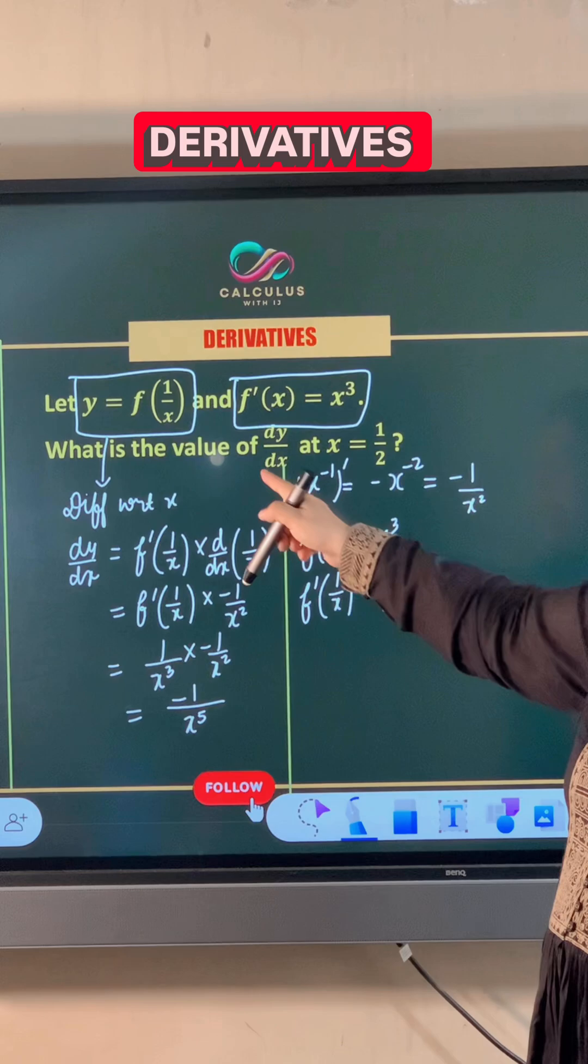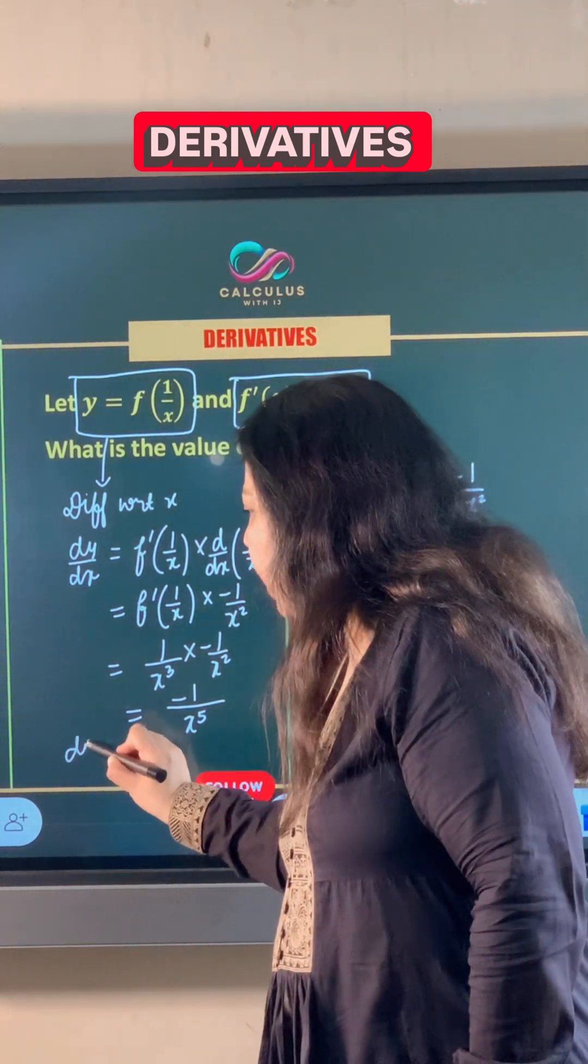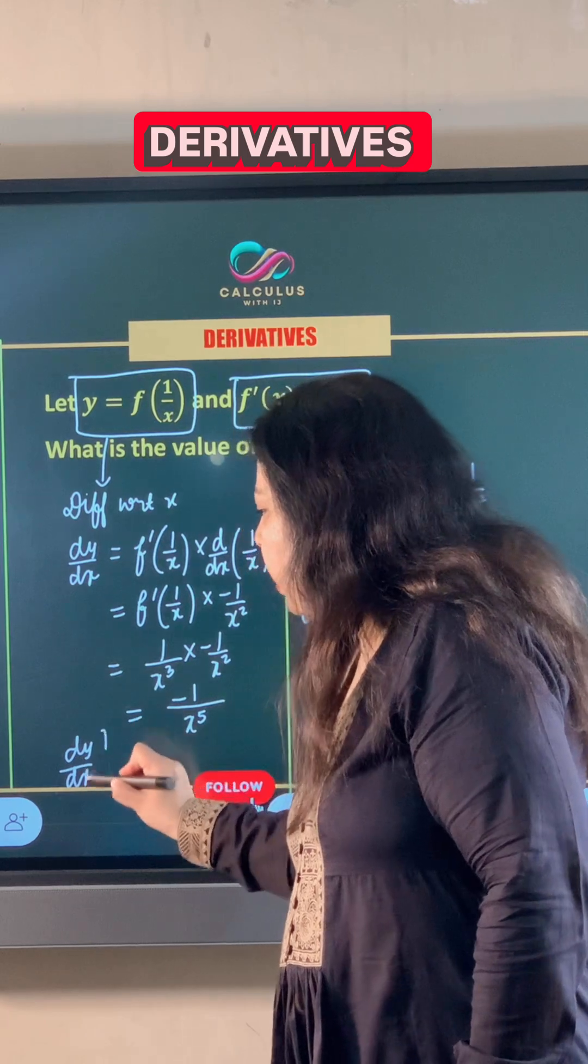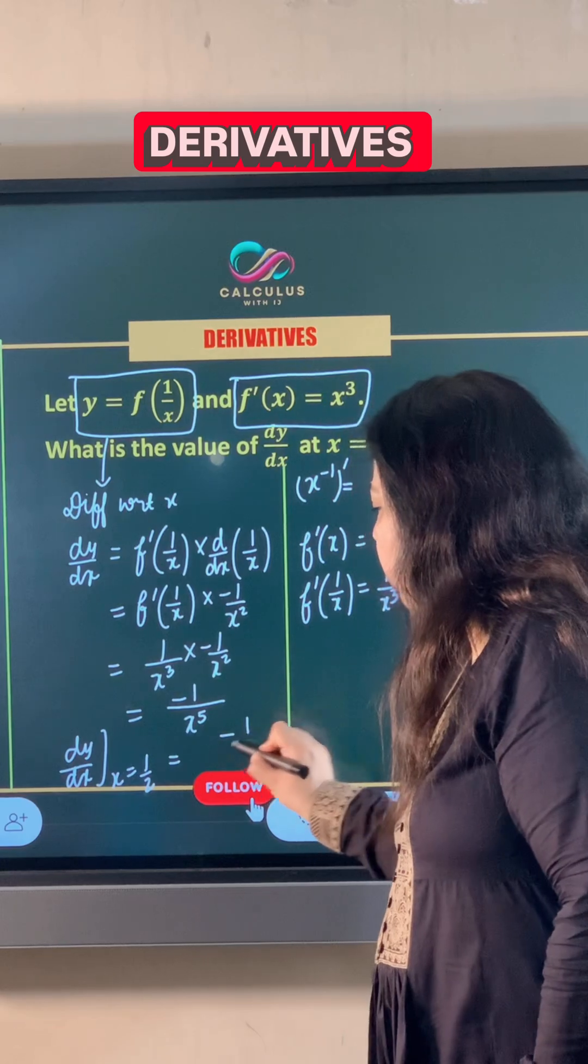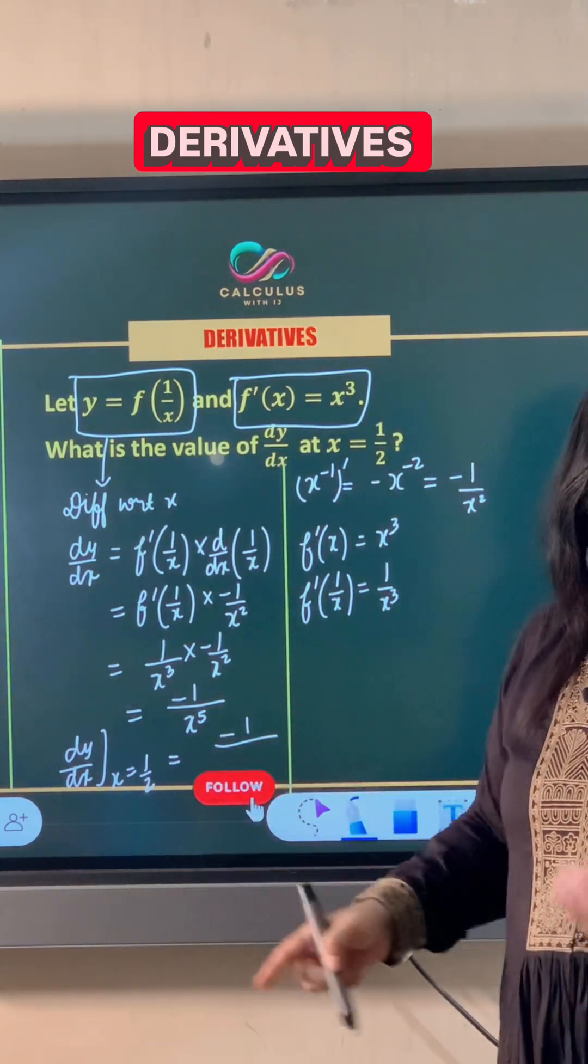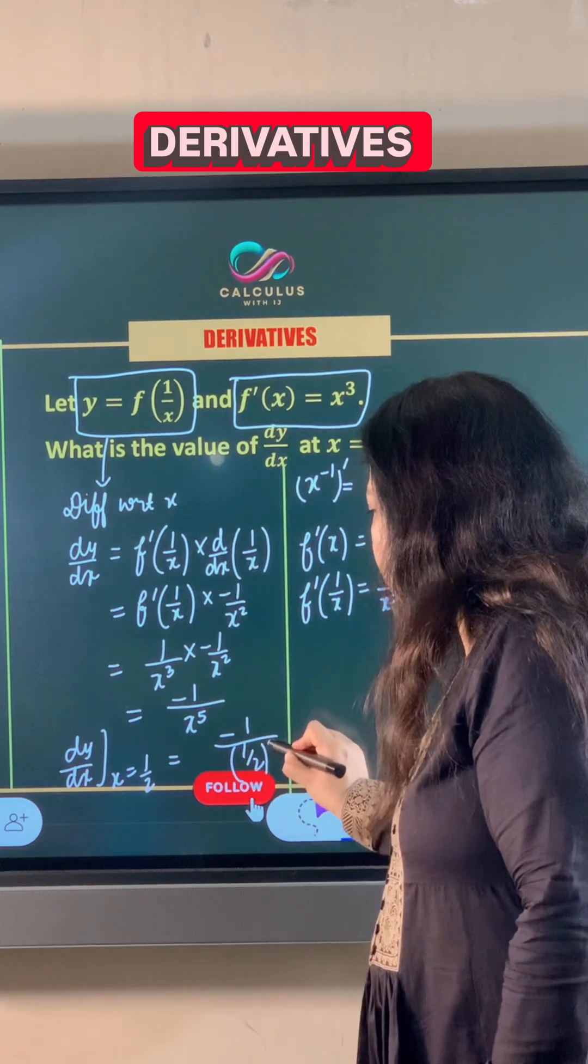Now we have to find the value of dy/dx at x equals 1/2. So the value of the first order derivative of y with respect to x when x equals 1/2 is negative 1 upon—instead of x we will write 1 divided by 2—1 upon 2 raised to power 5.